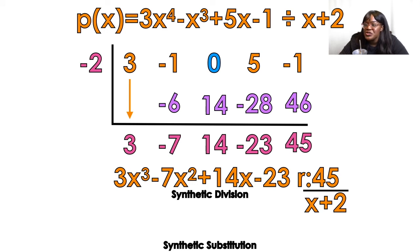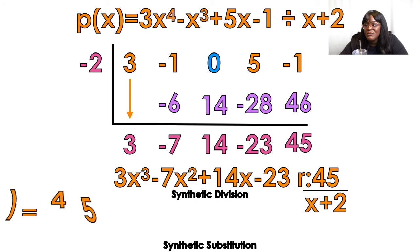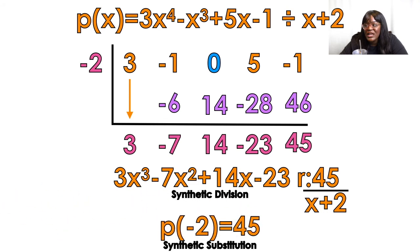Sometimes your teachers will ask you to do synthetic substitution — it's the same process, but your answer means that p of negative 2, when I plug negative 2 into that problem, equals 45. So on a graph, the point negative 2 comma 45 would be plotted for this function. So the same process — you're just looking at the last number, which is 45.